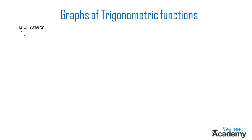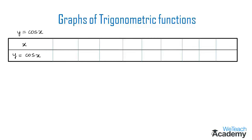Let us write the values of y corresponding to different values of x in a table. The values of x are in radians: minus pi, minus pi by 2, zero, pi by 2, pi, 3 pi by 2, 2 pi, 5 pi by 2, and 3 pi.